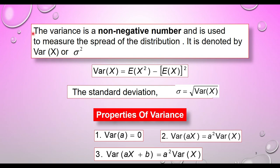What is the formula for variance? The variance is a non-negative number and it is used to measure the spread of the distributions. It is denoted by Var(X) or sigma squared. The variance of X is given as the expected value of X squared minus the expected value of X, squared. The standard deviation sigma is equal to the square root of Var(X).